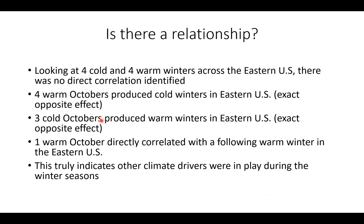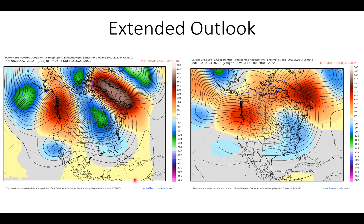So is there a relationship? Looking at the four cold and four warm winters across the eastern U.S., there was no direct correlation identified between October temperatures and the following winter. In general, warm Octobers produced cold winters in the eastern U.S. — the exact opposite of what we'd expect. Colder than normal Octobers produced warmer winters in the eastern U.S. — again, an opposite effect. Only one warmer October directly correlated with the following warm winter. This truly indicates other climate drivers and teleconnections were in play during those winter seasons.